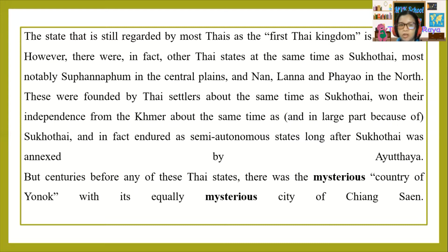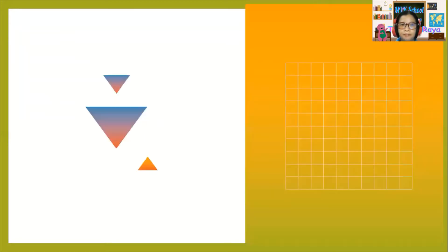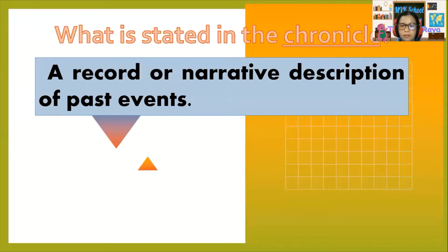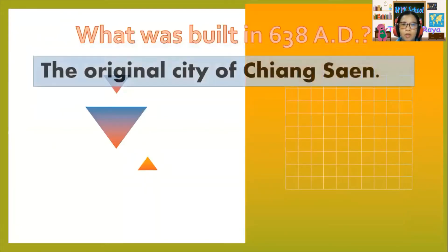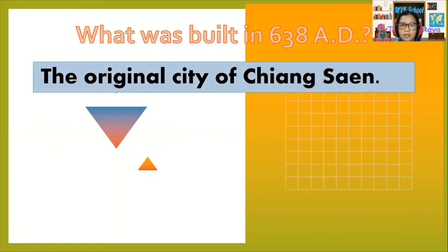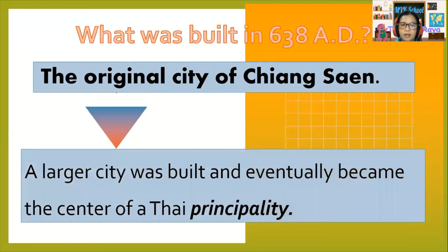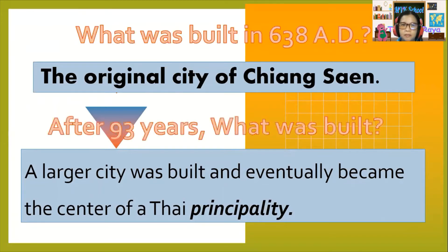But centuries before any of these Thai states, there was the mysterious country of Yunok and the equally mysterious city of Chiang Saen. What is stated in the chronicle — a record or narrative description of past events — tells us that the Thai of Yunok had a lot of contact and trade with the Khmer Empire, which ultimately invaded and conquered Yunok. What was built in 638 A.D.? The original city of Chiang Saen. A larger city was built and eventually became the center of a Thai principality after 93 years.